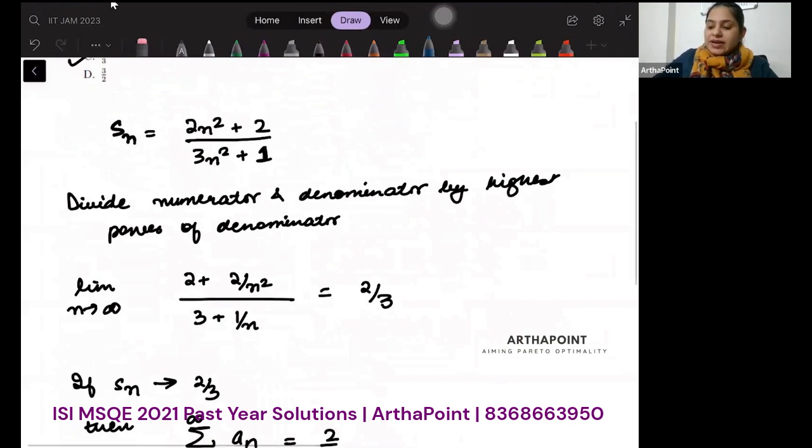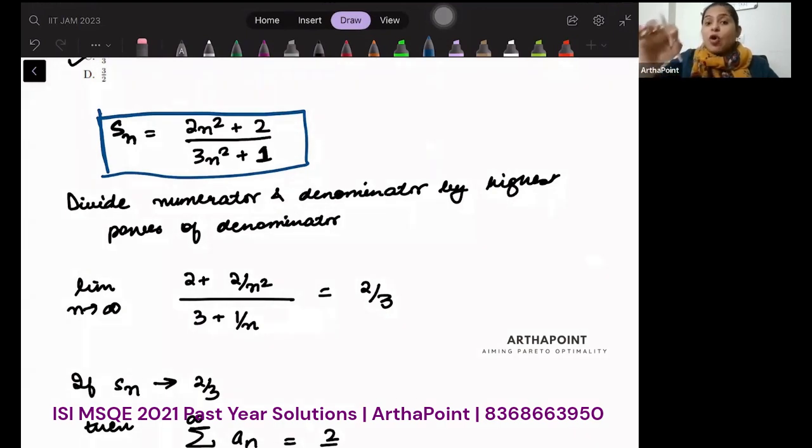I will start by taking Sn as this. Now, a general rule of limit is that whenever you are given an Sn term which has n in both numerator and denominator, you will always divide by the highest power of denominator. So the highest power of denominator is n squared. So I will divide numerator and denominator by n squared.